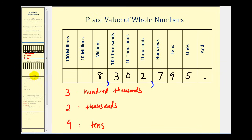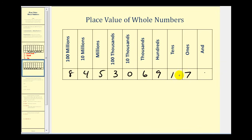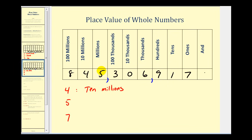Let's take a look at one more example of this. Let's go ahead and put the commas in to separate our place values. Starting from the right, we put a comma between every three digits. So this would be eight hundred forty-five million, three hundred six thousand, nine hundred seventeen. So this four would be in the ten-millions place value, the five would be in the millions place value, and the seven would be in the ones place value.